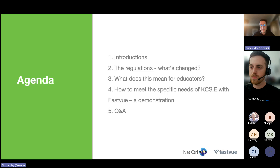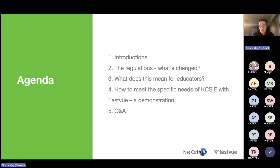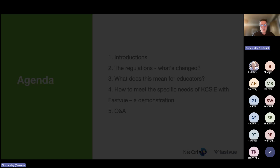A bit of background on FastView: we've been in this market for about 25 years. We specialise in supplying software into schools which allows schools to understand what their students and staff are doing online, which with the KCSie regulations is now incredibly important. We're in about 600 schools across the UK and around 6,000 globally. FastView's originally an Australian company, very well established, very safe — not going anywhere.